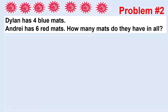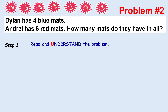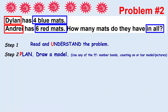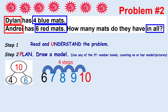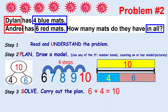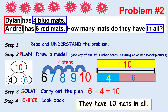Let's have another problem. Dylan has four blue mats. Andre has six red mats. How many mats do they have in all? First, understand the problem — box important words or details. You can also box 'in all,' which means you're going to add. Then plan — draw a model using number bonds, counting on, or bar models. Solve — carry out the plan and write your addition sentence: six plus four equals ten. Then check — did you answer the question? Yes, they have ten mats in all.